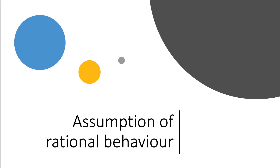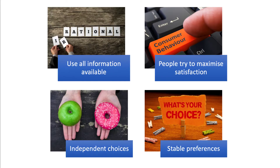Most standard economic theories are based on the assumption that every agent operating in the market — whether a consumer, a producer, or someone taking part in an activity — is making their choices and behaving rationally. This assumption of rational behavior has dominated standard economic thinking and orthodox theory for decades.